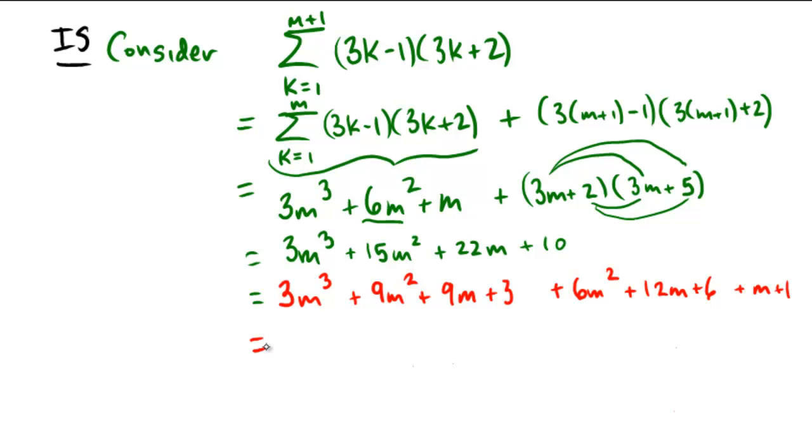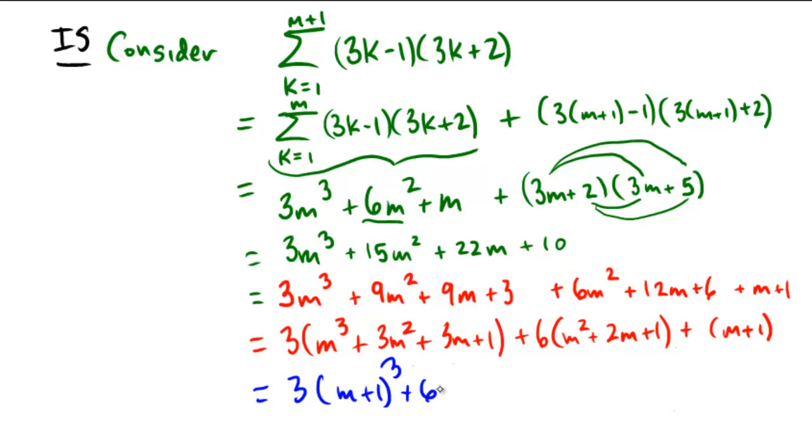Okay, what do I have here now? This becomes 3 times m cubed plus 3m squared plus 3m plus 1, plus 6 times m squared plus 2m plus 1, plus that little m plus 1 hanging off at the end. Now if you look at that really closely and remember the discussion we did at the beginning, you'll notice that this is precisely equal to 3 times m plus 1 cubed plus 6 times m plus 1 squared plus m plus 1.